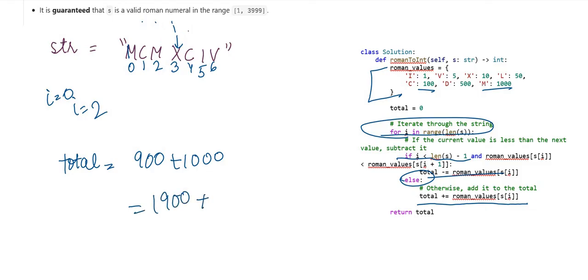Let's go next. This is I, this is I plus 1. So I is less than I plus 1, true or false? X is less than C. Yes. So what we will do is we will subtract the value of X. X value is 10.